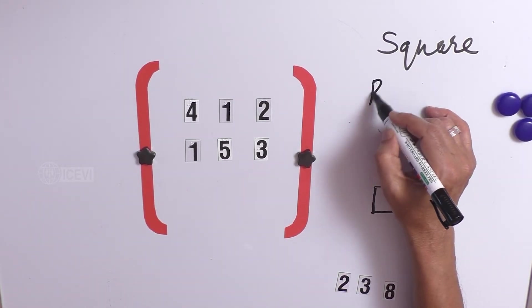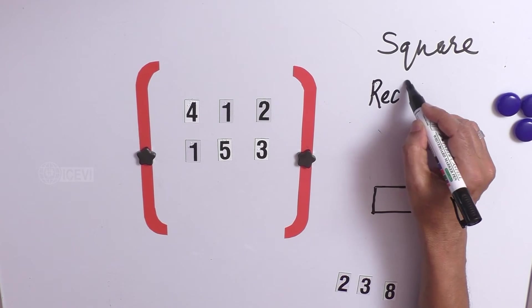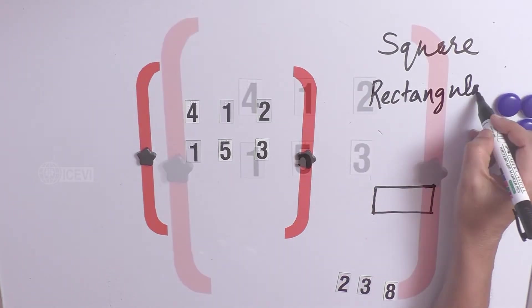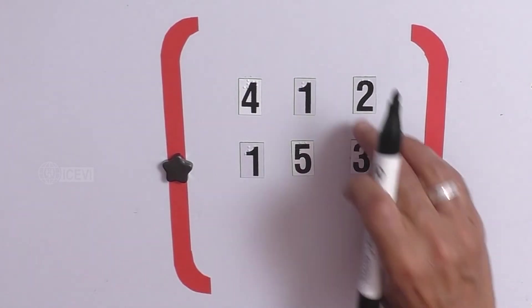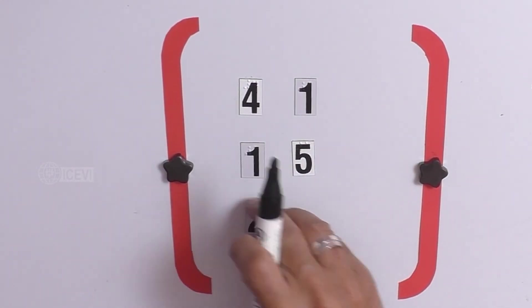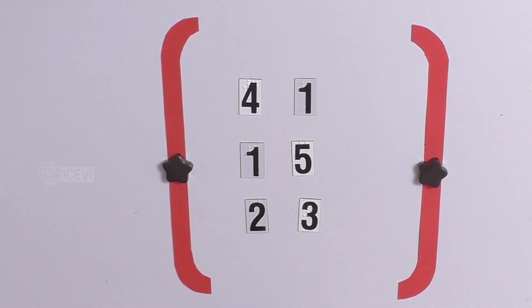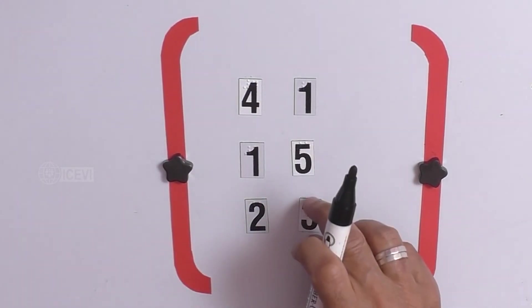So, here, we call that rectangular matrix. In the case of 3 by 2, this is 3 by 2. You know, 3 rows and 2 columns. 3 rows and 2 columns.